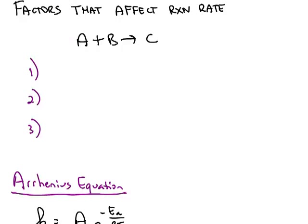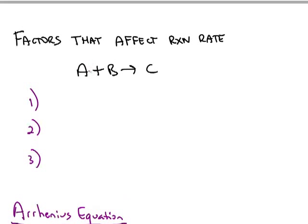In looking at a reaction such as A plus B turns into C, in order for this reaction to actually produce C, there are some things that have to happen. The first obvious thing is there has to be a collision. A has to collide with B.